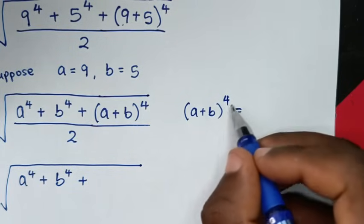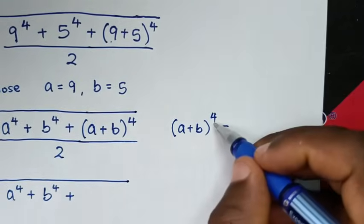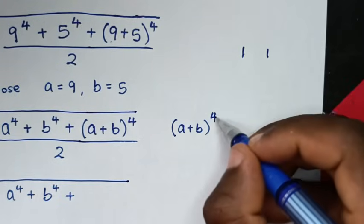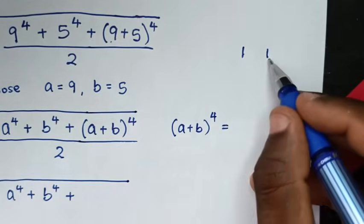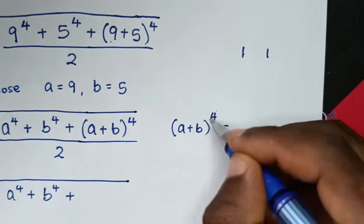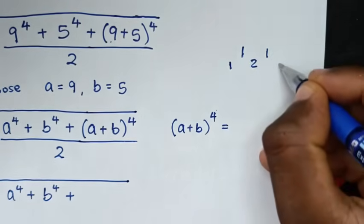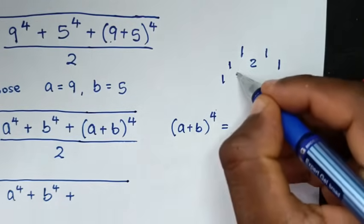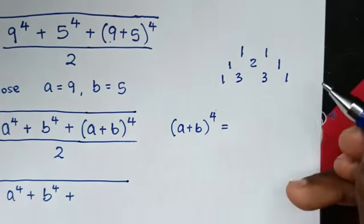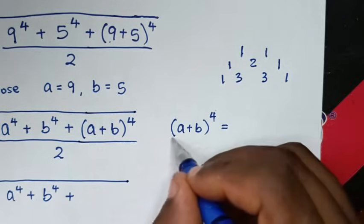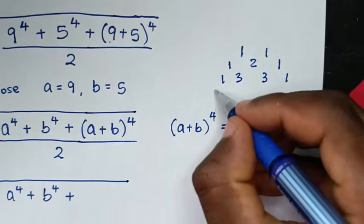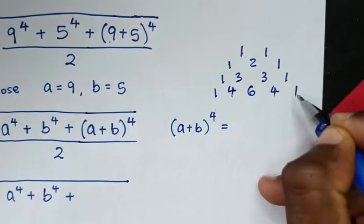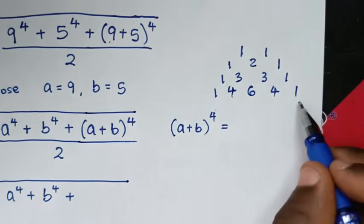From (a+b) to the power 4, the coefficients using Pascal's triangle are: when power is 1, coefficients are 1, 1; when power is 2, coefficients are 1, 2, 1; when power is 3, coefficients are 1, 3, 3, 1; and when the power is 4, the coefficients are 1, 4, 6, 4, 1.